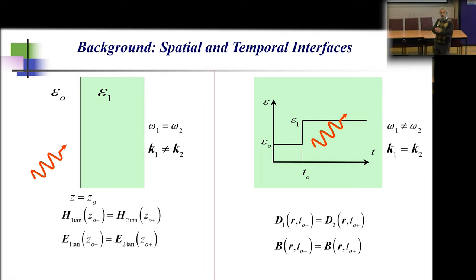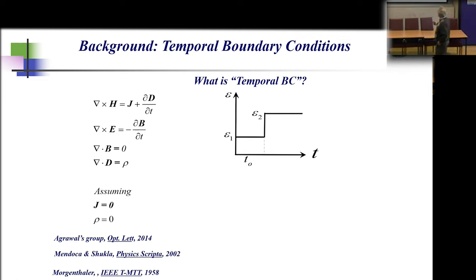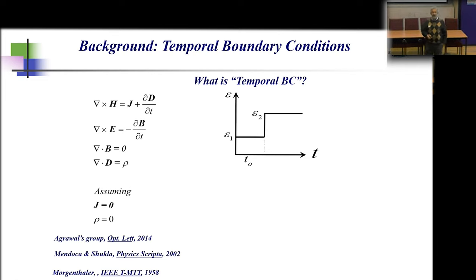Vector B also has to stay continuous. The boundary condition in time is different from the spatial case. Following Maxwell's equations, the spatial derivative must be finite — that's the spatial interface boundary condition. For the temporal interface, we need dD/dt and dB/dt to stay finite just before and just after, which means vector D and vector B must be continuous.